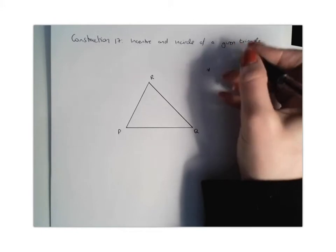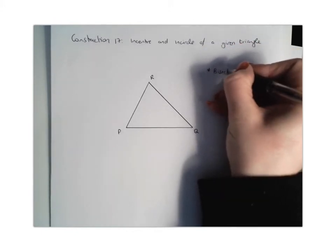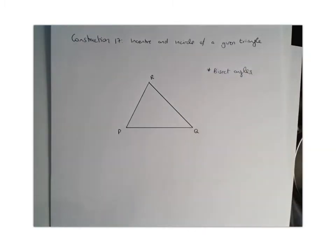So our trick with construction 17 is we need to remember that we're going to bisect the angles. Okay, so that's what we're going to do to start off with.